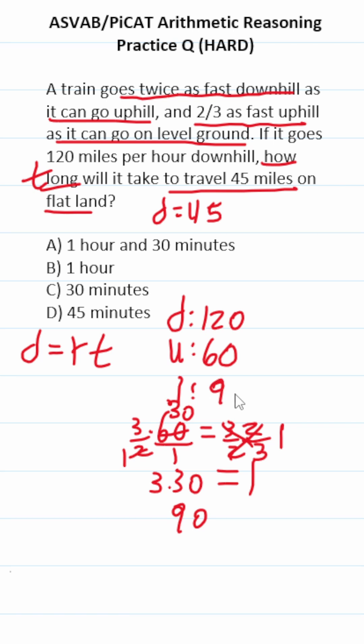So this train goes 90 miles per hour across level ground. We have everything we need to solve this. Distance is 45 miles, rate across level ground is 90 miles per hour, and we're solving for T. To solve for T, divide both sides by 90. This crosses out, leaving you with T.